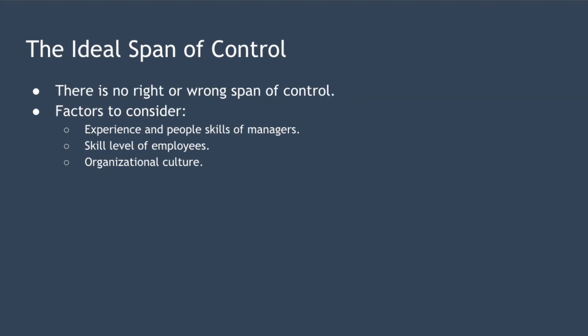Sometimes an organization will define its ideal span of control — that's the number of direct reports that managers within the organization should ideally have. If a manager has more than that number, they will be considered to be overutilized, and conversely, if they have less than that number, they're considered underutilized.